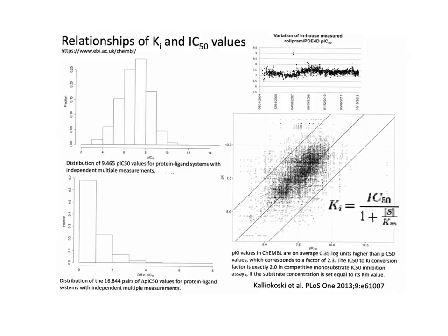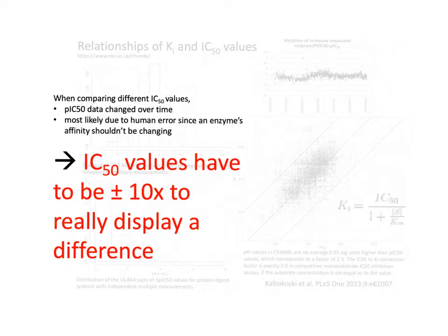This is also from your PowerPoint. Dr. Haworth went over how these data were collected, so I'm not going to repeat that. Instead, I'm going to reemphasize the main points of these graphs. So on the left here, the data was comparing different IC50 values, and there was a lot of variation, and that implies that the enzyme affinity is changing over time. But that actually can't be the case because it's impossible — an enzyme's affinity shouldn't be changing, which most likely means that there's a lot of experimental error.